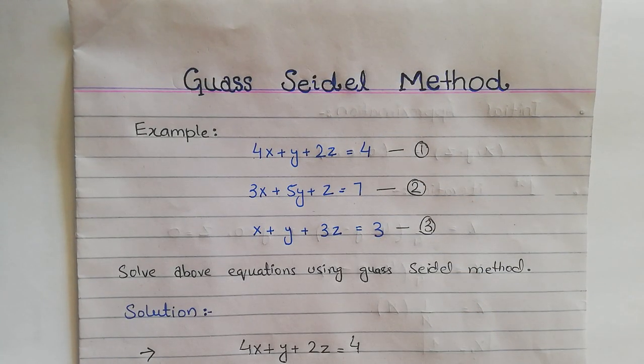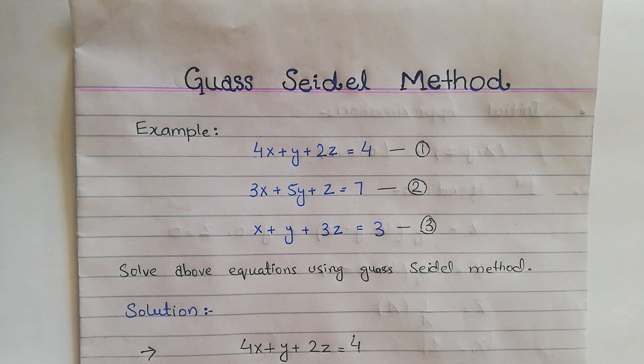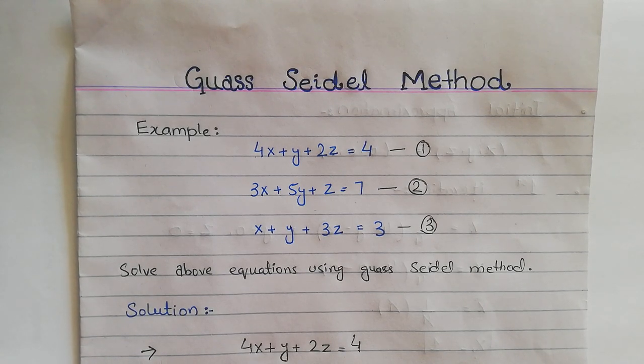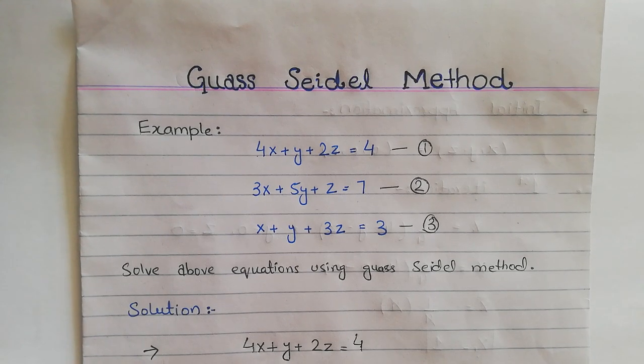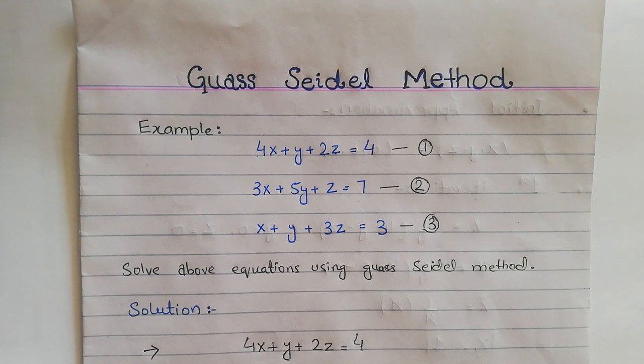So that was the Gauss-Seidel method. I hope you understood it. If you have any questions, please ask me in the comment section. Allah Hafiz.